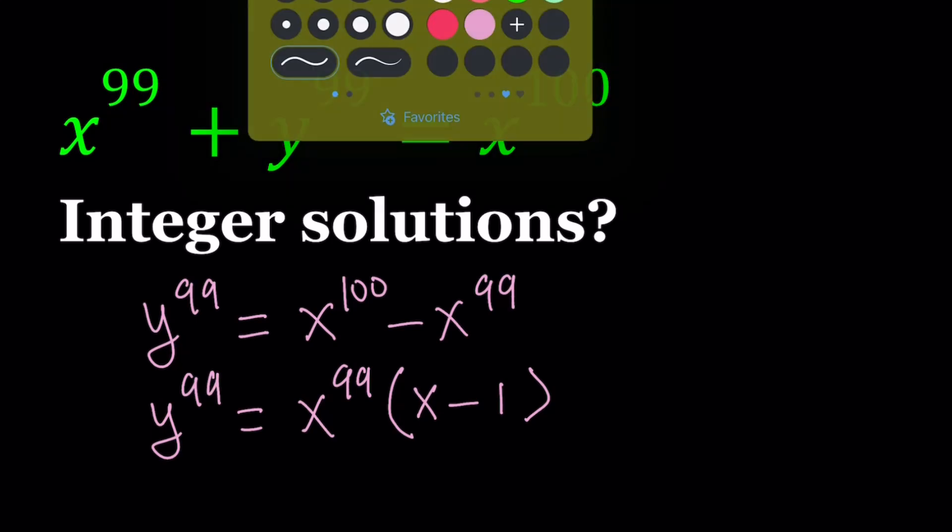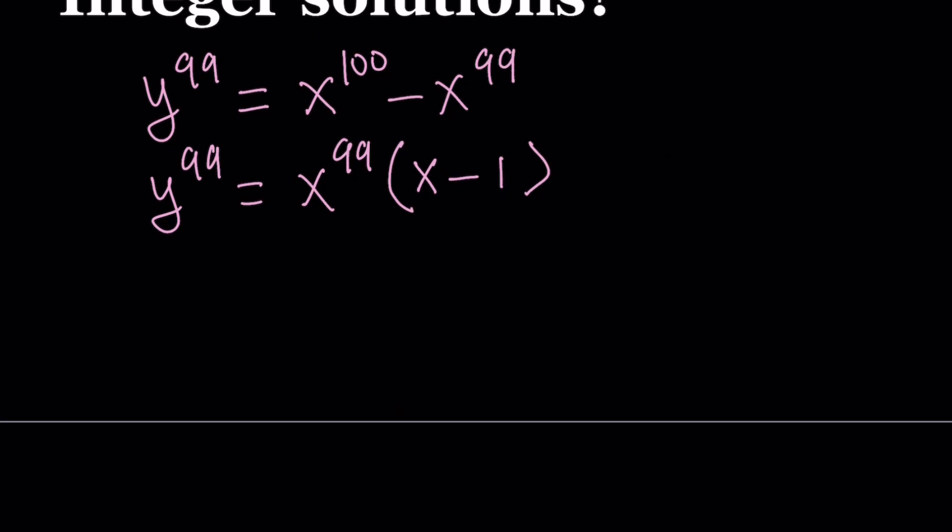Let's go ahead and take a look at what we can do with this. So, okay, fine. You factored it. So what, right? Well, notice that I have the 99th power on both sides. If you don't pay attention to what's inside the parentheses, so that kind of gives you an idea. The stuff inside the parentheses must also be a 99th power.